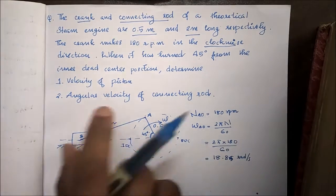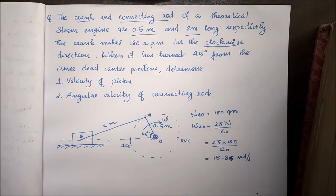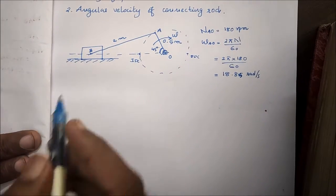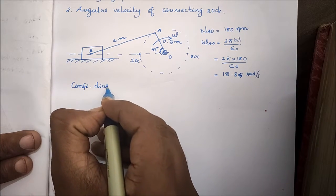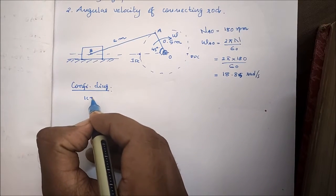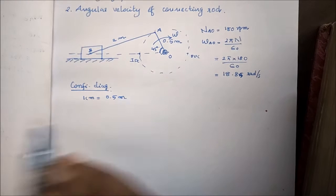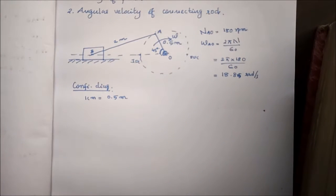When it comes to the configuration diagram, we have to draw the configuration diagram. The scale is 1 centimeter equal to 0.25 meters.